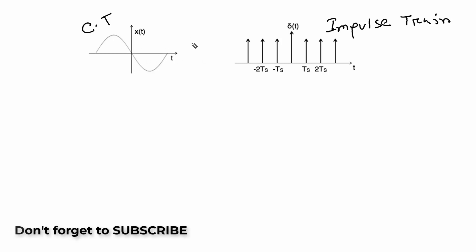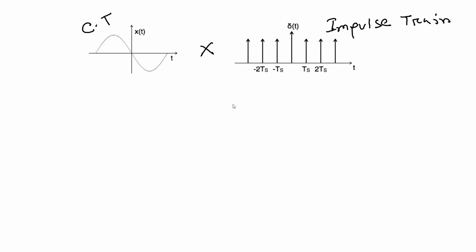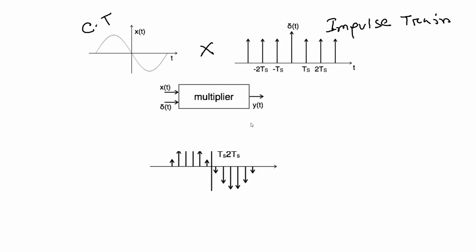The continuous time signal, the impulse train, and the multiplier. The continuous time signal will be multiplied by the multiplier. So eta, x(t), and delta are combined. We can see what Y(t) is — that means this is the discrete time signal.